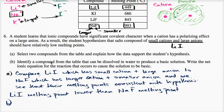Part B: Identify a compound from the table that can be dissolved in water to produce a basic solution. Write the net ionic equation for the reaction that occurs to cause the solution to be basic. So let's think about how we can form a basic solution — we would need to grab some hydrogens from the water molecules in order to have some hydroxide around. There are a couple of candidates: you have all of these halides — the iodide and the fluoride.